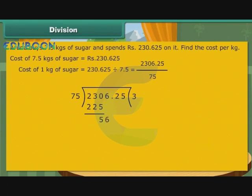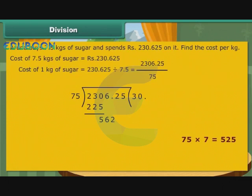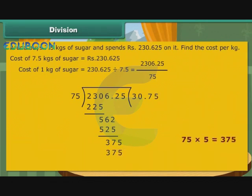Bring 6 down — the new number is 56, which cannot hold 75, so write 0. Bring 2 down; since 2 appears after the decimal point, place a decimal point in the quotient. The new number 562 holds 7 times 75, which is 525. Subtract to get remainder 37. Bring 5 down — the new number 375 holds exactly 5 times 75. Write 5 and subtract to get remainder 0, marking the end of the division.